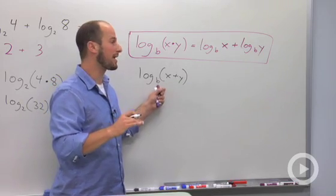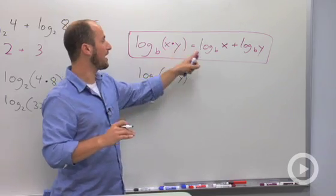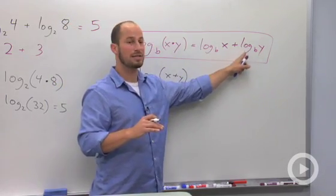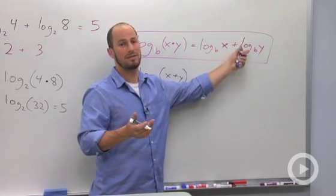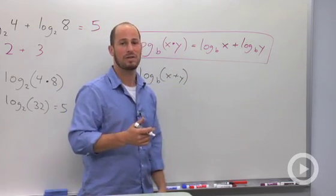It's only working when we're multiplying inside the log. So this works both ways. If we have the sum of two logs, same base, we could put it back together to be a product. Or if it's a product inside a log, we can split it up into two different logs.